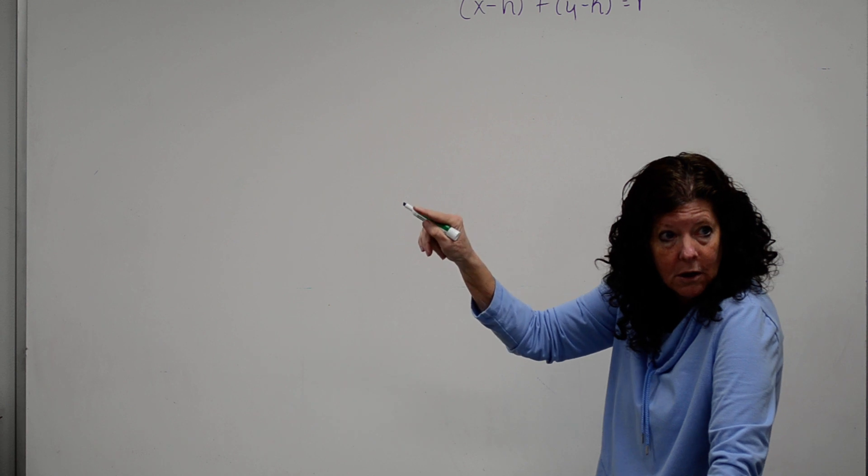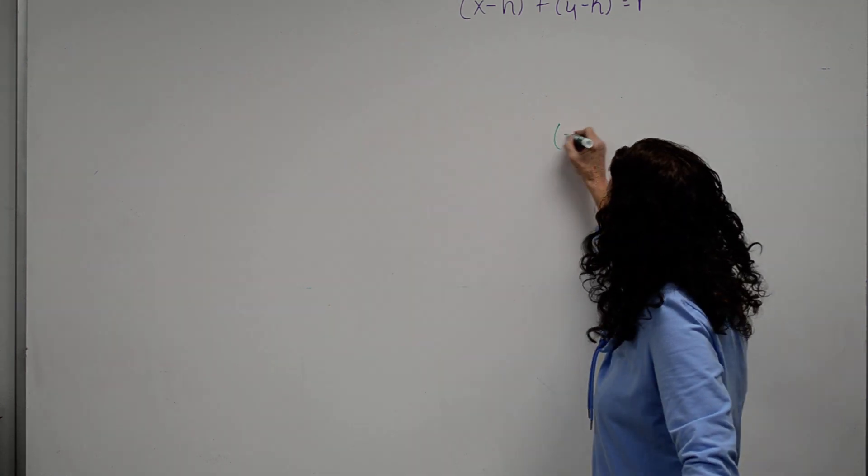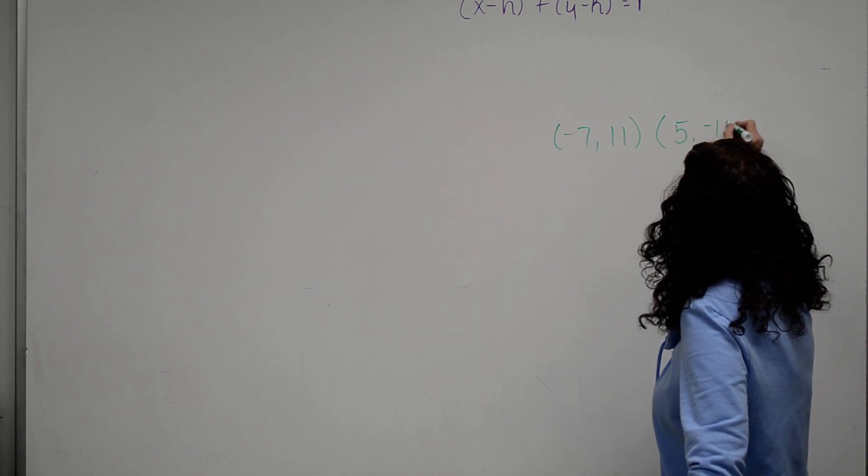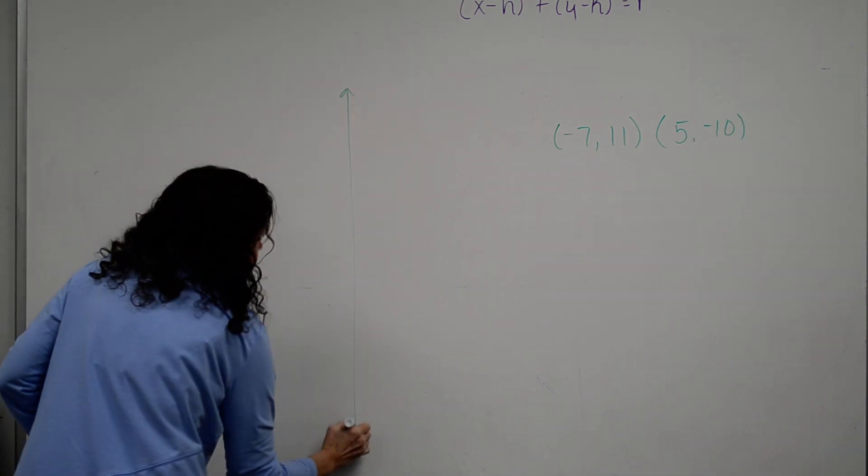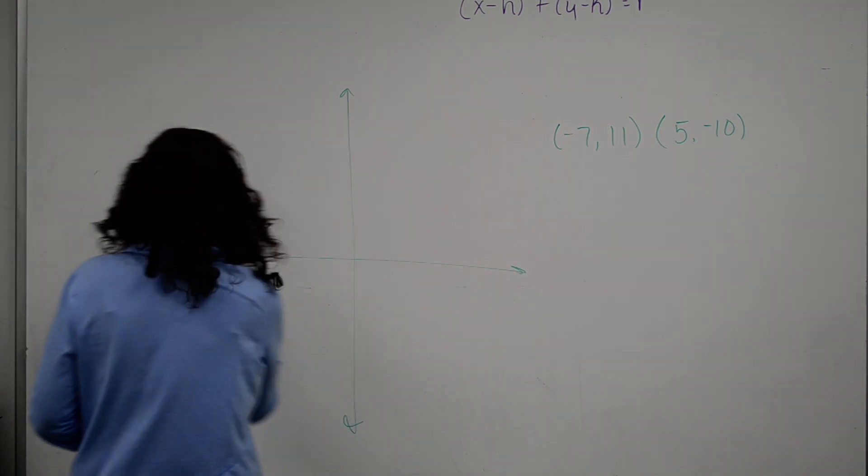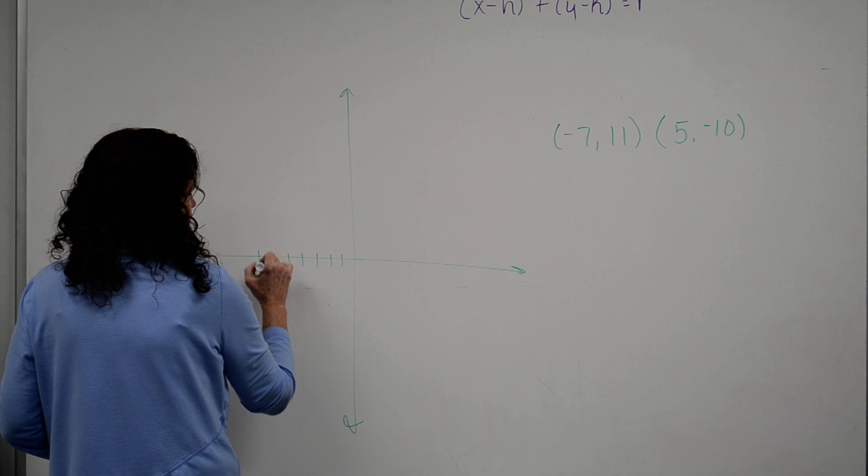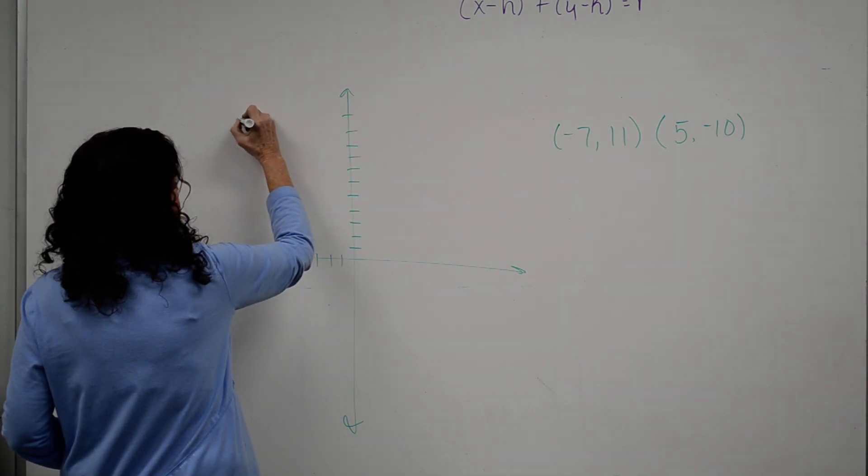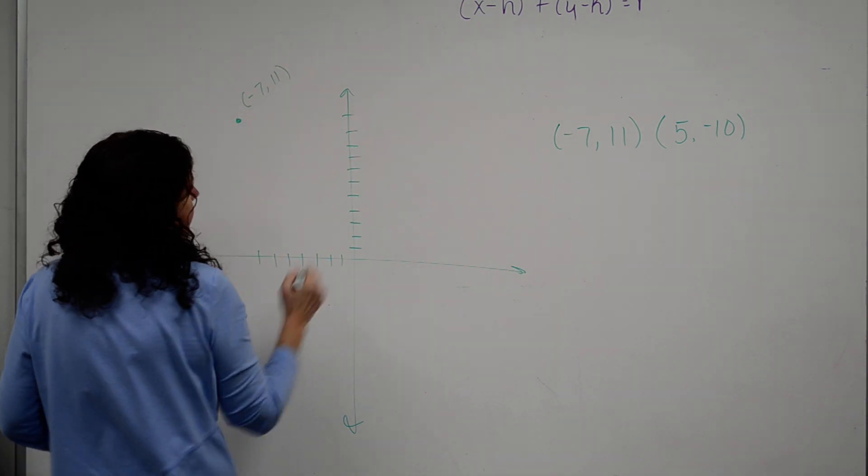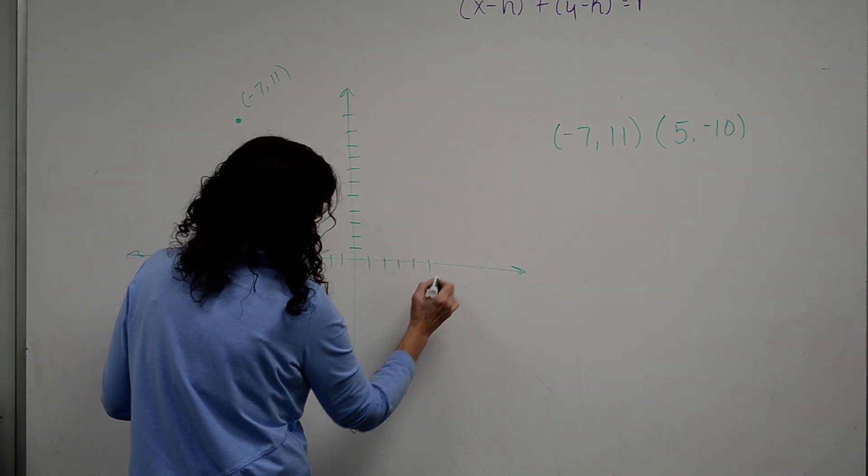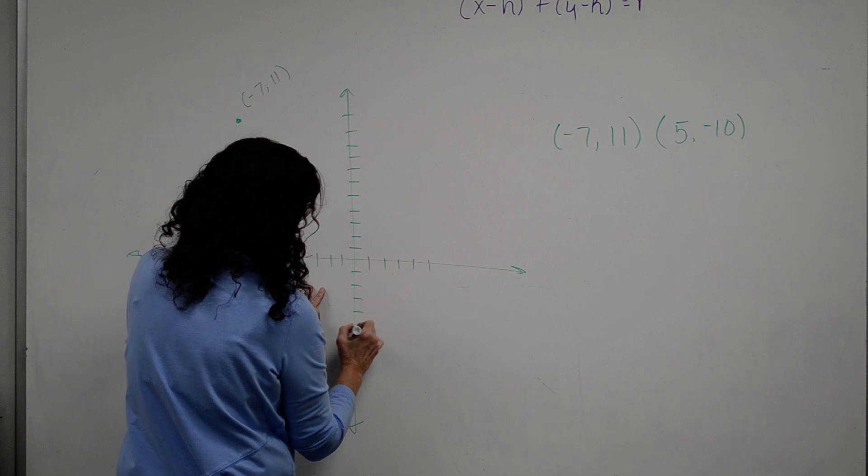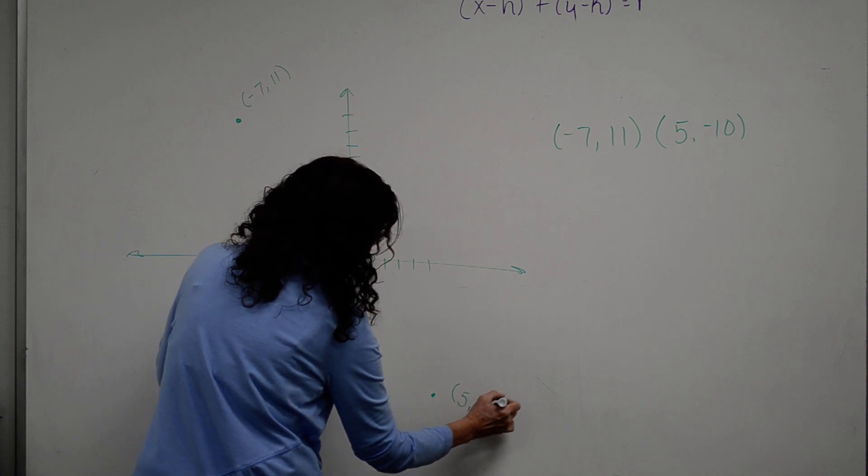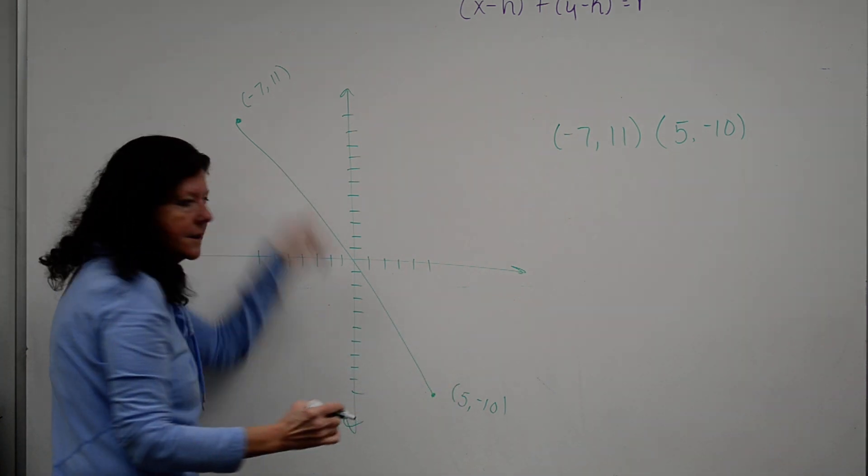Now, the diameter is through the center of the circle to a point on the outside, is negative 7, 11, and 5, negative 10. Okay, so what that means is this. Okay, that's the point, negative 7, 11. Then, I've got 5, negative 10. That's the diameter of the circle.